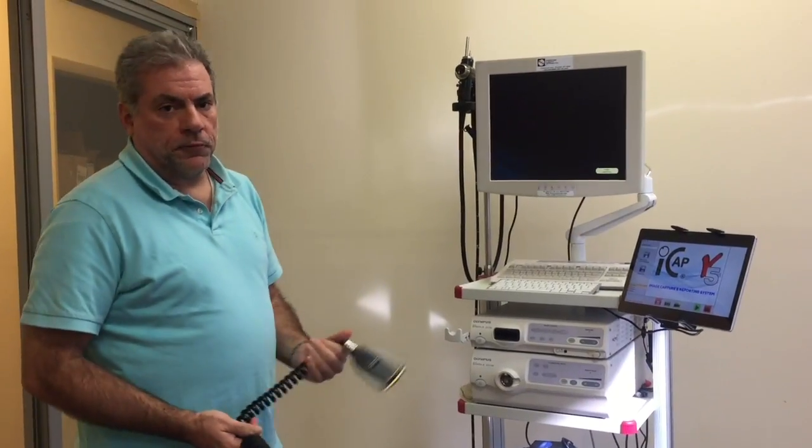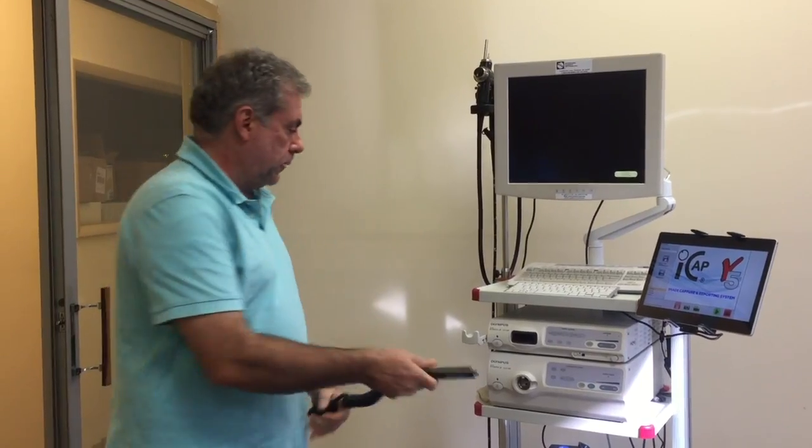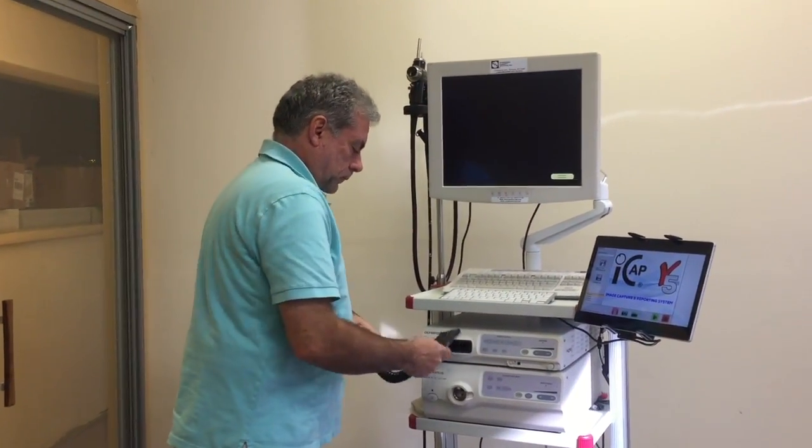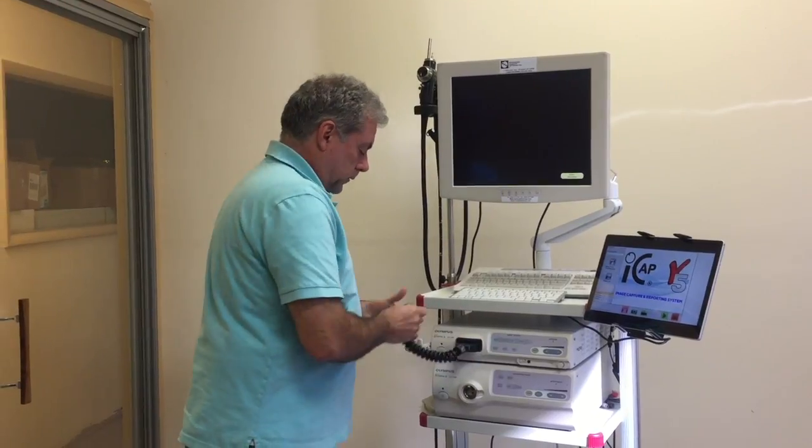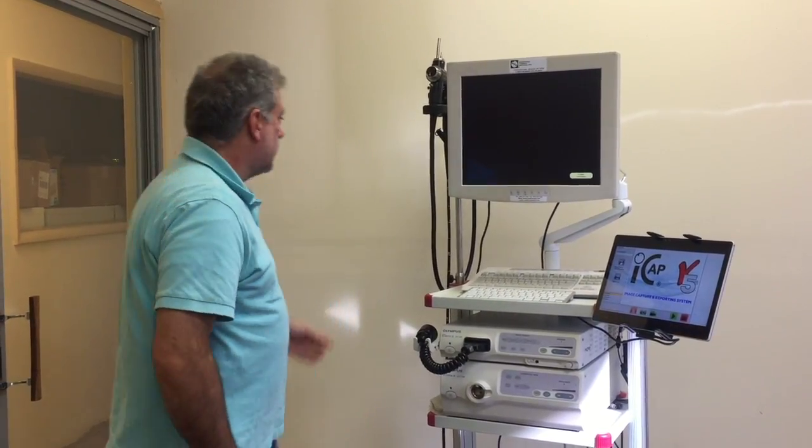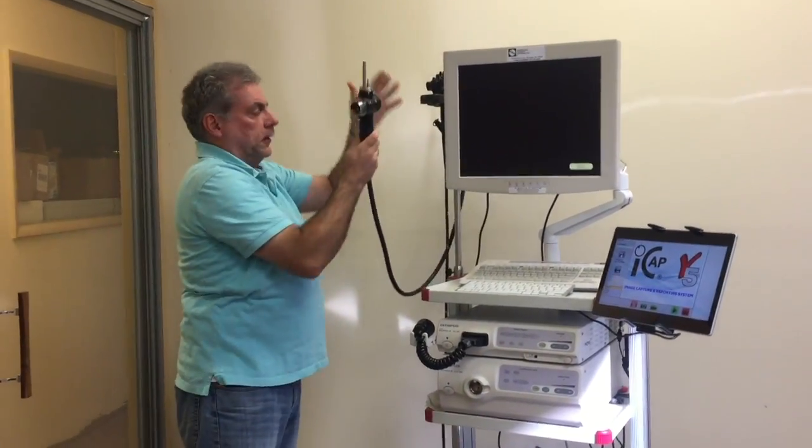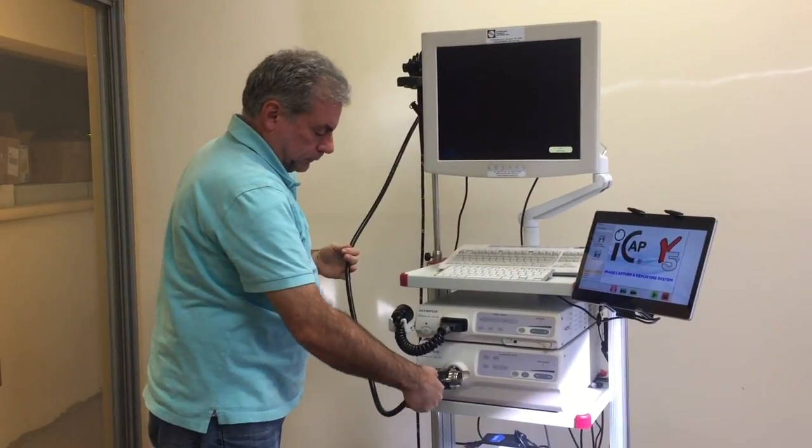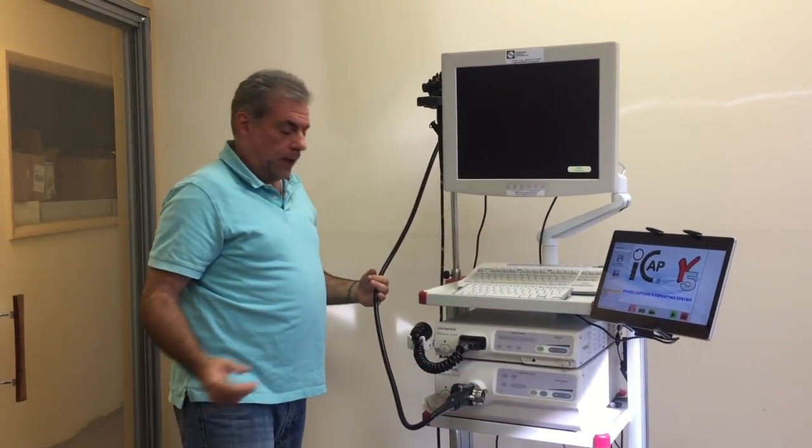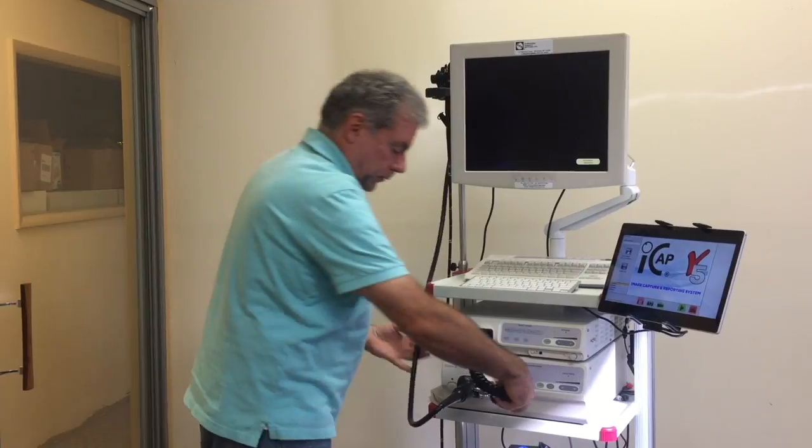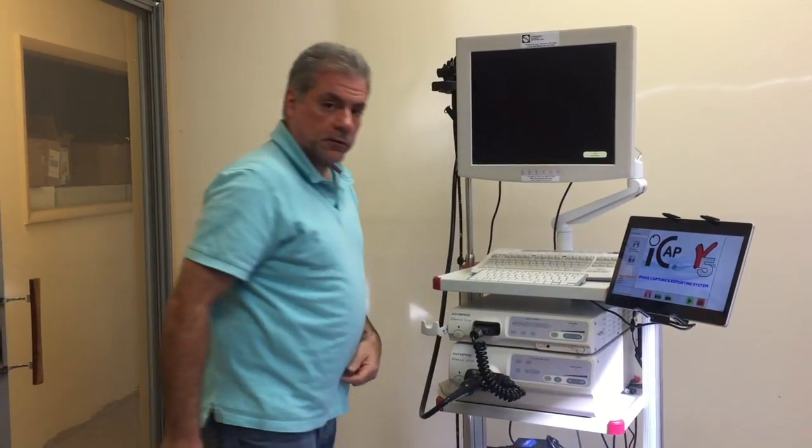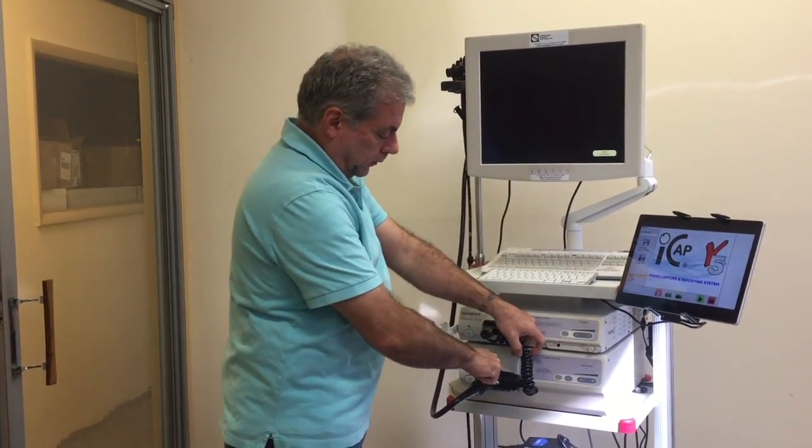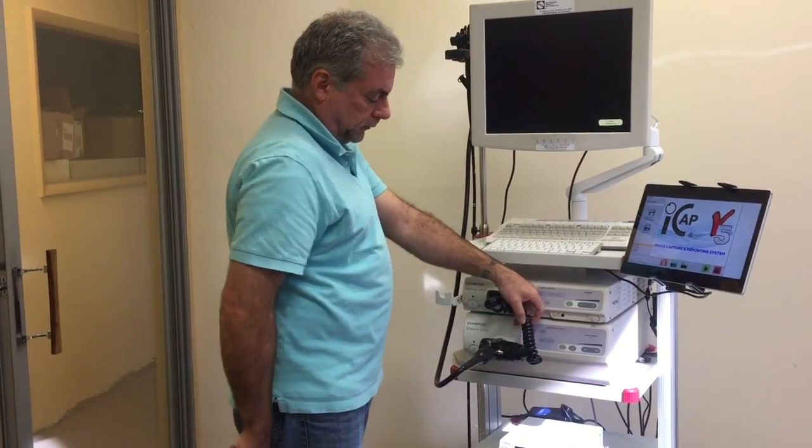Okay so now we're going to hook up the flexible scope using the pigtail cable. So simply just put the pigtail cable into the front of the processor. Got a little holder here on the side to hold it. Take our endoscope, plug it into the light source. It plugs in and locks. Take the pigtail cable, put it to the scope by lining up the little yellow dot to the line and then rotate and twist to lock.